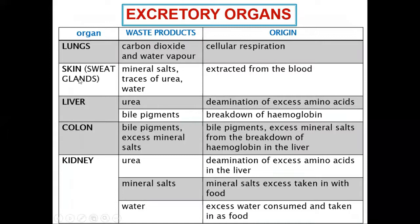The excretory organs include the lungs, skin, liver, colon, and kidney. In this case you don't see the digestive system as a whole, however some parts of the digestive system like the colon are included. Carbon dioxide is an excretory product because when you break down glucose to produce energy, carbon dioxide is produced. Carbon dioxide becomes an excretory waste — that's why its source is cell respiration.